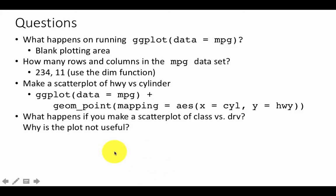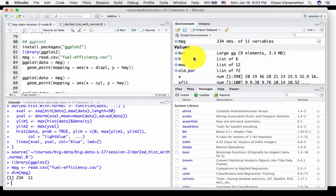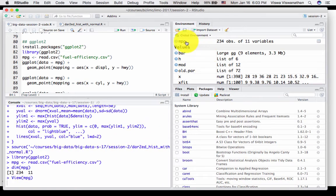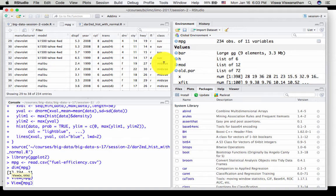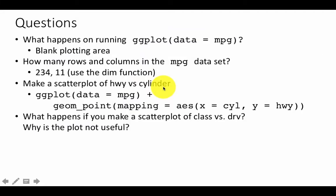Okay, what happens if you make a scatter plot of class versus drive? That is class being one of the columns in the data frame. So I'm going to do here view MPG. Or I can go here and just click on MPG. And one of the variables is called class. See here, it says compact. And then as you go down, you see SUV, midsize, medium, midsize, et cetera. That's what class is.